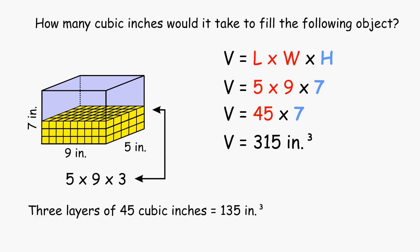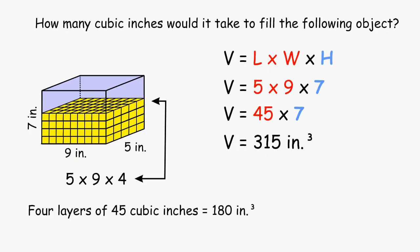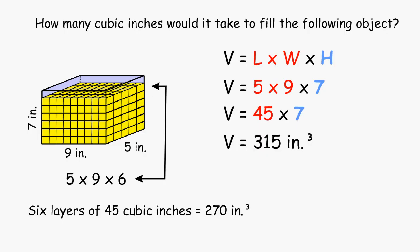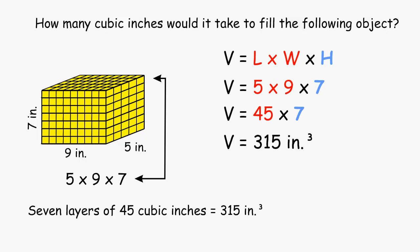Three layers is 135 cubic inches, four layers is 180 cubic inches, five layers is 225 cubic inches, six layers is 270 cubic inches, and finally seven layers of 45 is equivalent to 315 cubic inches, which is the total volume of this rectangular prism.